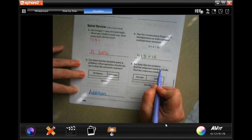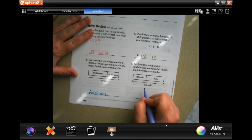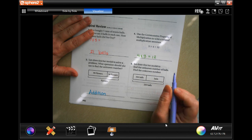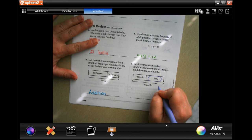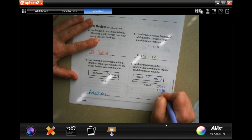Okay, Jo drew this bar model to find an unknown number of balls. Find the unknown number. Okay, so there's 250 all together and there's 106 here, so let's find out how many go here. Okay, so we're going to go 250, and I'm going to take away the 106.